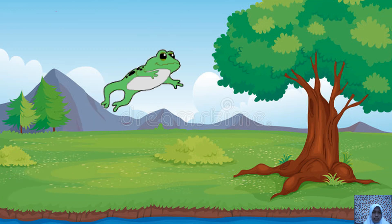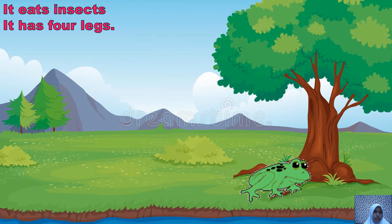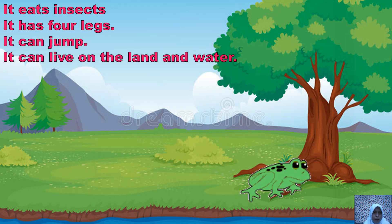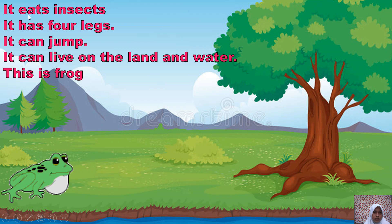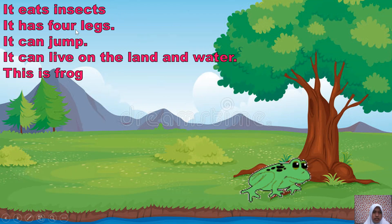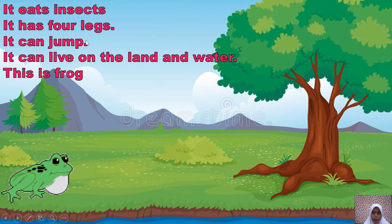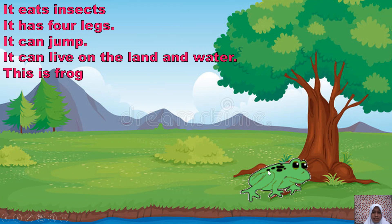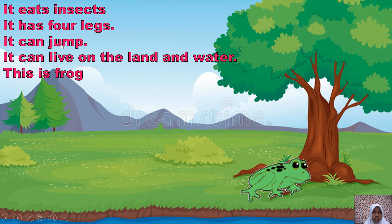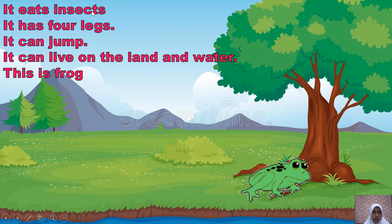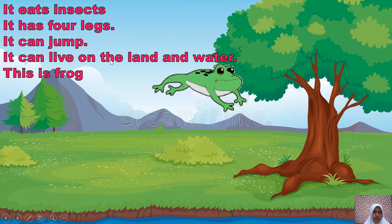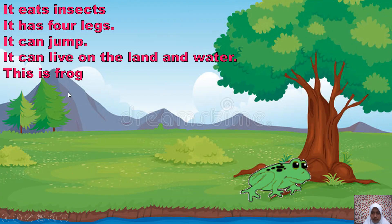Next: it eats insects, it has four legs, it can jump, it can live on the land and water. Can itu dapat; jump itu lompat; land itu daratan; water itu air — bisa tinggal di daratan dan air. Perhatikan ciri-cirinya: kalau ciri-cirinya seperti ini, artinya hewan itu adalah frog.